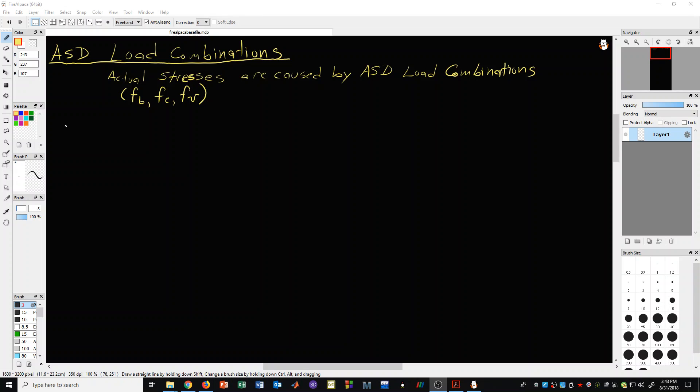Let's look at the ASD load combinations. The first one just has dead load in the load combination. The second one has dead plus live. Notice that L here is for floor live load.